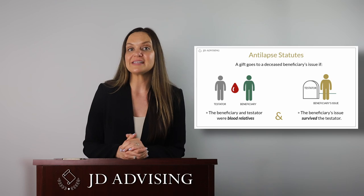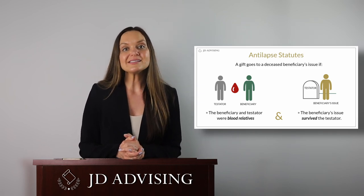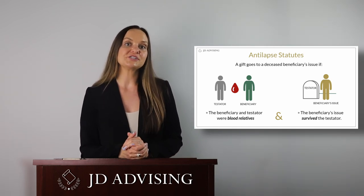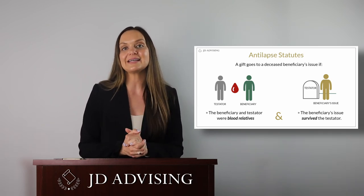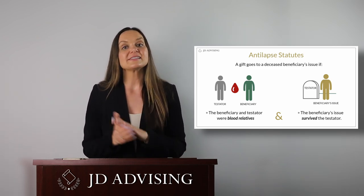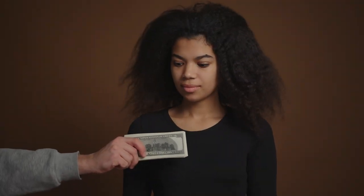The final highly tested issue is anti-lapse statutes. Under the general rule, if a beneficiary does not survive the testator, the gift lapses or fails and goes to the residuary of the estate. However, all states now have anti-lapse statutes. Under a typical statute, if a beneficiary dies before the testator and was related to the testator by blood and left issue who survived the testator, the gift is saved from lapsing because the beneficiary's issue will take the gift in lieu of the deceased beneficiary. For example, if you leave a gift to your sister in your will but she predeceases you, leaving behind a child (your niece), then pursuant to the anti-lapse statute, the gift will instead go to your niece.